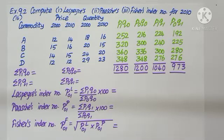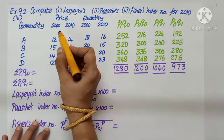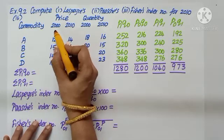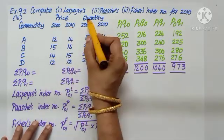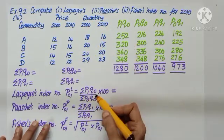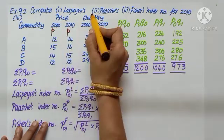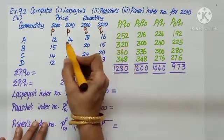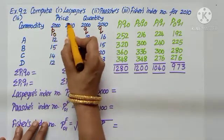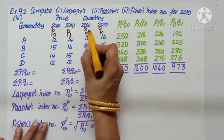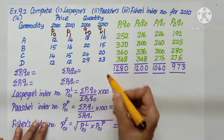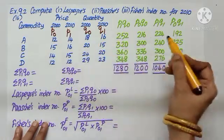Question number 16. Calculate Laspeyre's, Paasche's and Fisher's index number for the year 2010 as compared to the year 2000. Again, we are given some commodities, years 2000, 2010, quantity 2000, 2010. How should we mark it? Price tells me P, quantity tells me Q, 2000 is base year 0, current year 1. 2000 base year 0, current year 1. Having marked, let us find out the total.